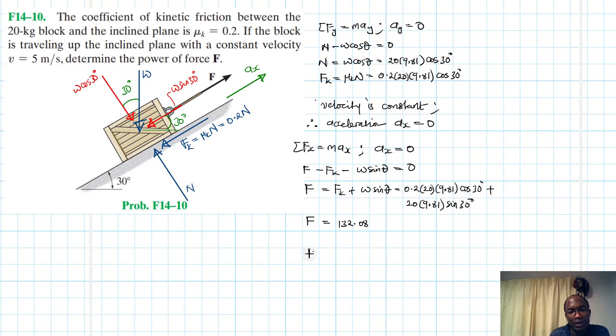So power will just be equal to F cos θ times V. Okay, and our F here we just found is 132.08. Our θ is just equal to 0 degrees, and our V is constant and is equal to 5. Therefore power will just be equal to 132.08 cos 0 degrees times 5. This just gives us 660.4.